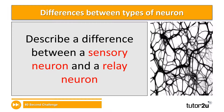So in your worksheet, we're going to do question 13, and the question you're going to focus on is: describe the difference between a sensory neuron and a relay neuron. In answering this question, I'd like you to describe the difference in terms of their structure.